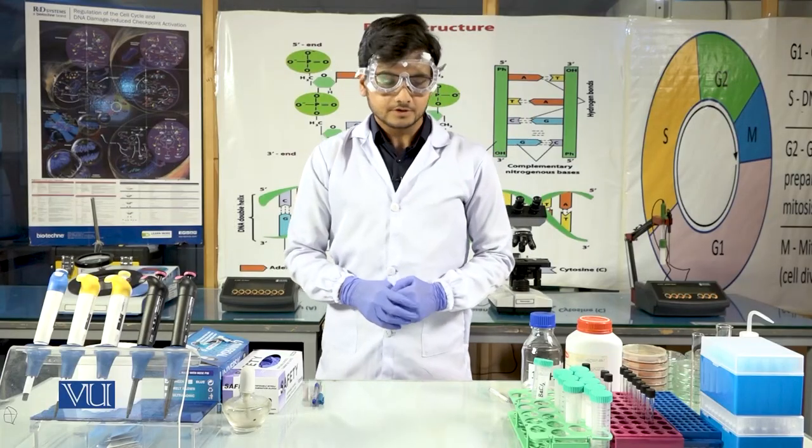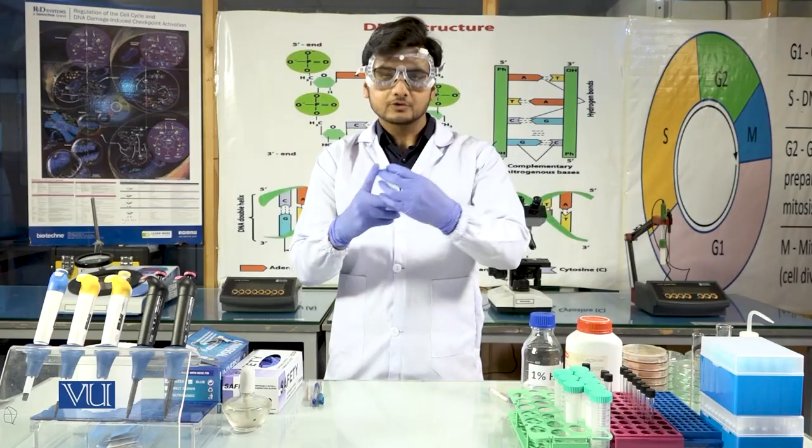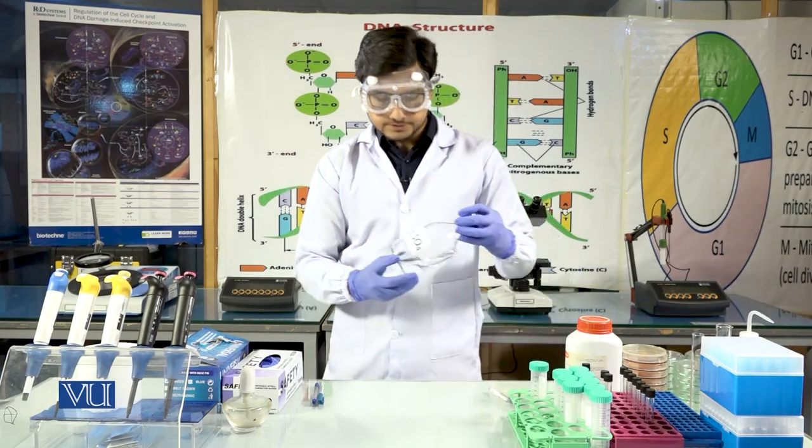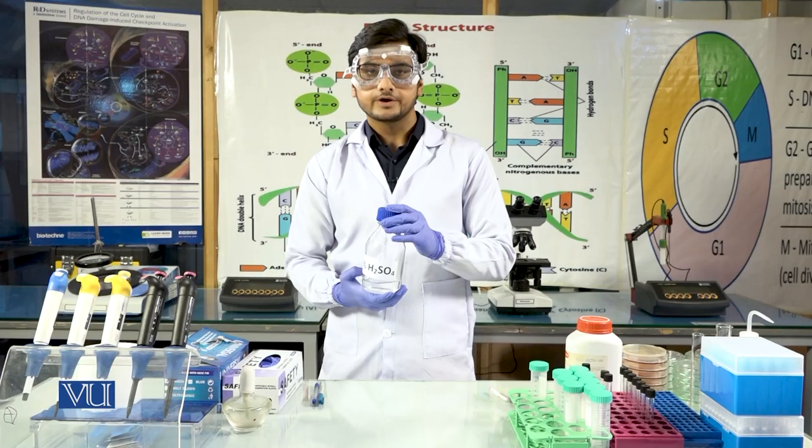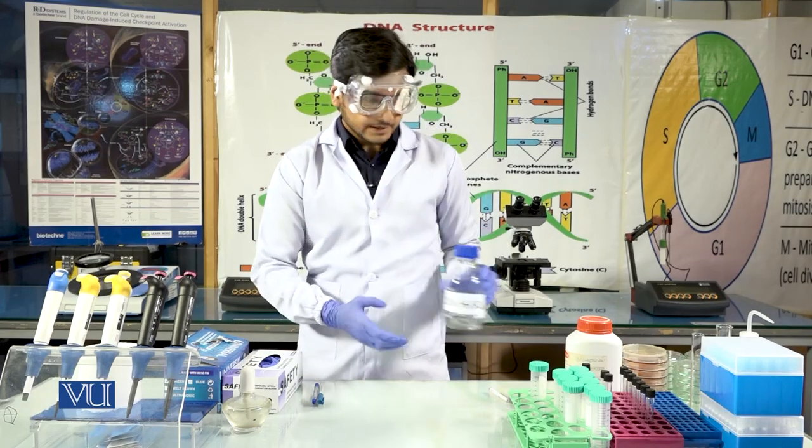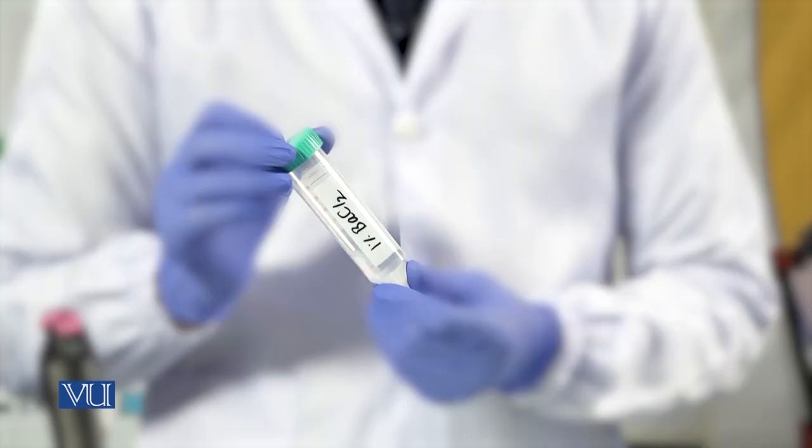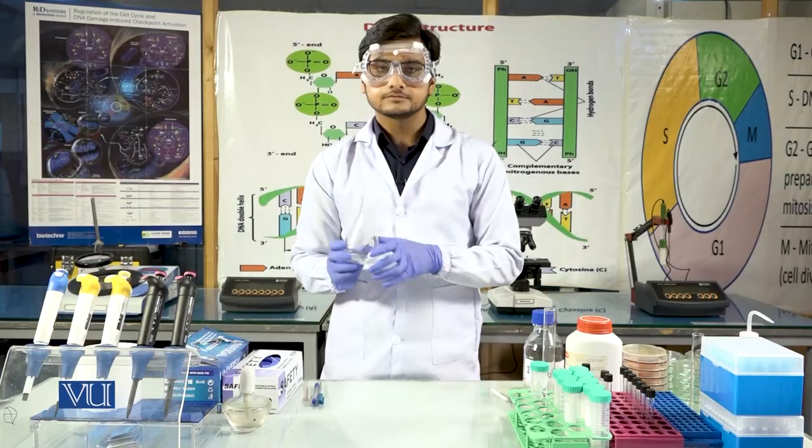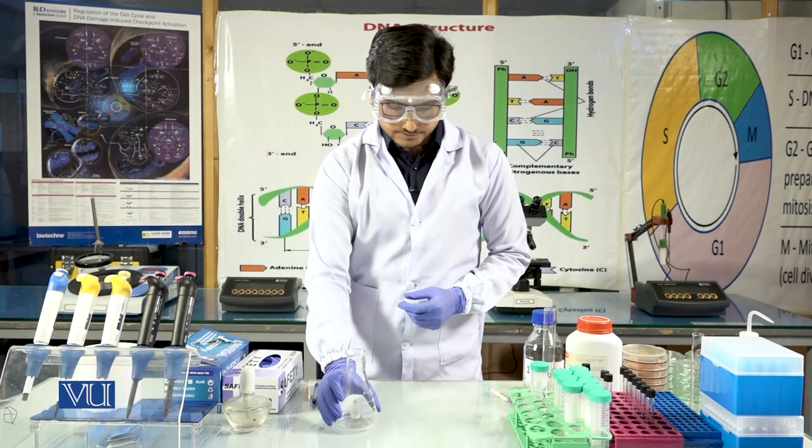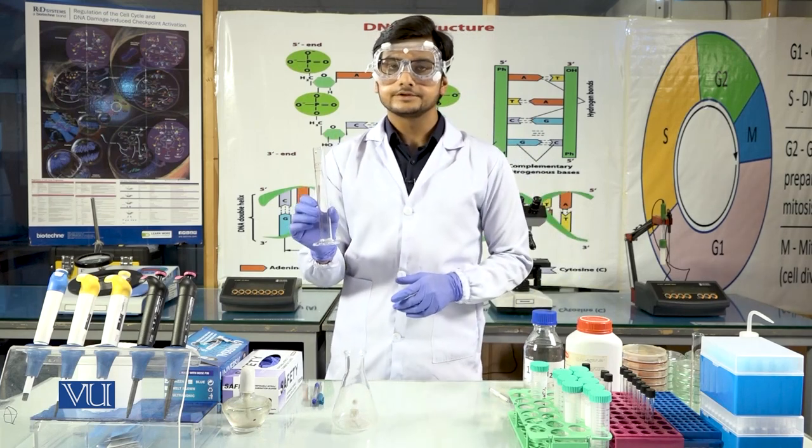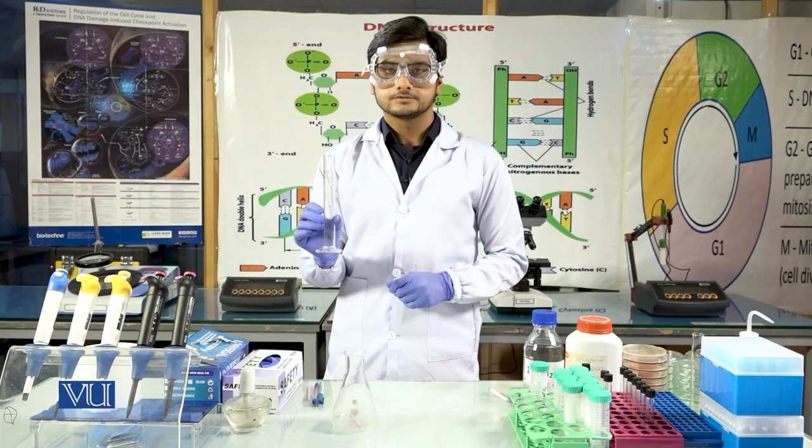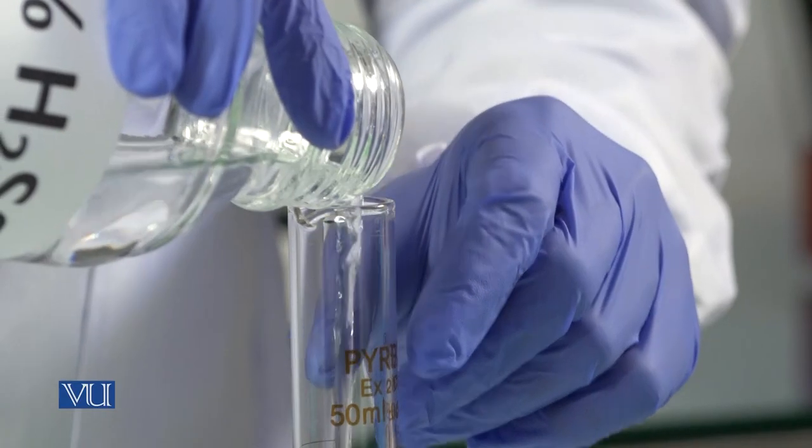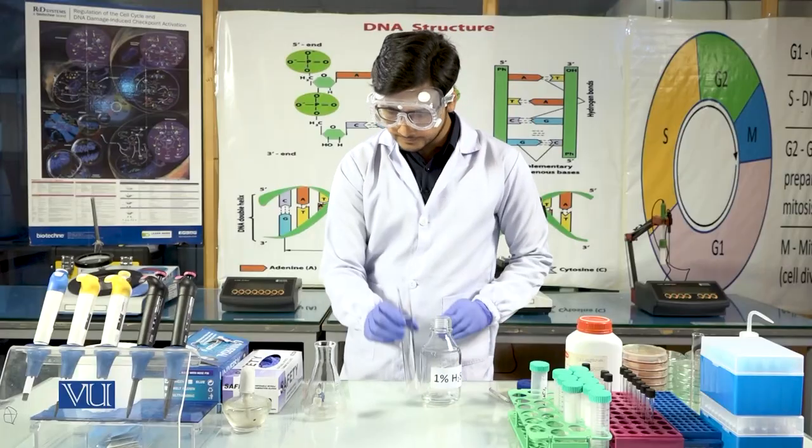For 0.5 McFarland Standard preparation, we will require 1% barium chloride solution and 1% sulfuric acid. We will take 99.4 ml of 1% sulfuric acid and add 0.6 ml of 1% barium chloride solution. First of all, we take this glass flask and a measuring cylinder to measure the liquid. We will take 99.4 ml of 1% sulfuric acid and add it in the flask.